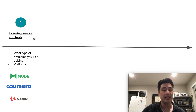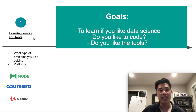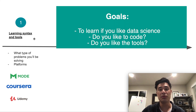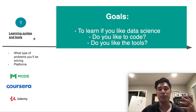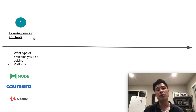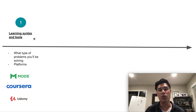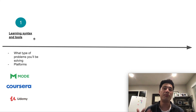The first step is learning syntax and tools — your first exposure as somebody learning to become a data scientist. Your goal in this stage is to understand what some of the problems are in data science, to see if you like that type of problem, to see if you like coding, to see if you like the platforms and tools a data scientist would use. The whole point is to learn how to code, learn statistics, math, modeling, and all of that theory, and to test out the tools and platforms you'd be using on the job.